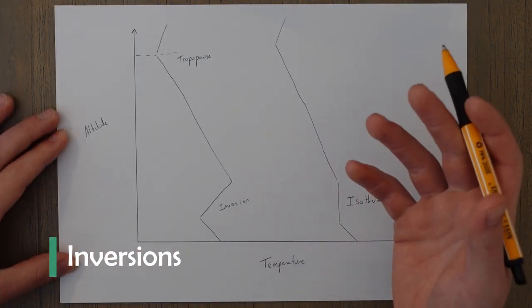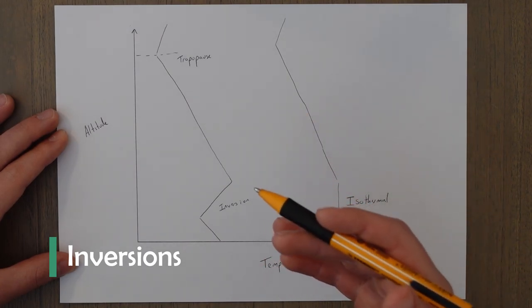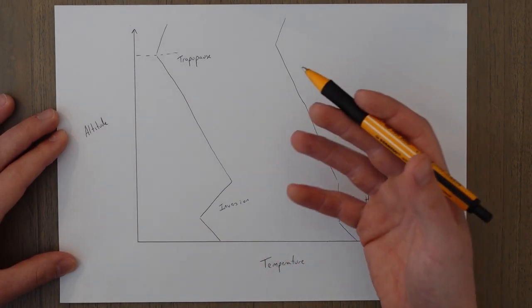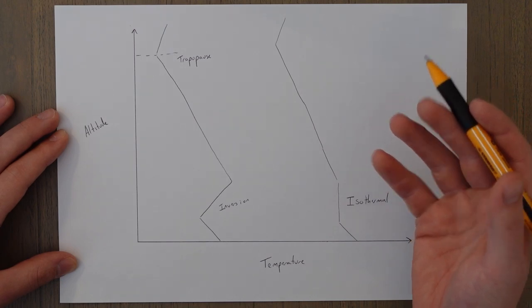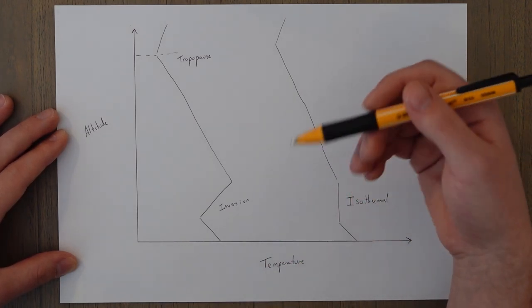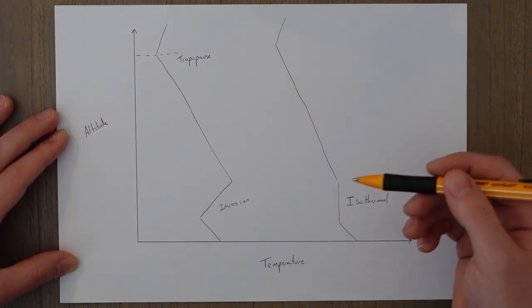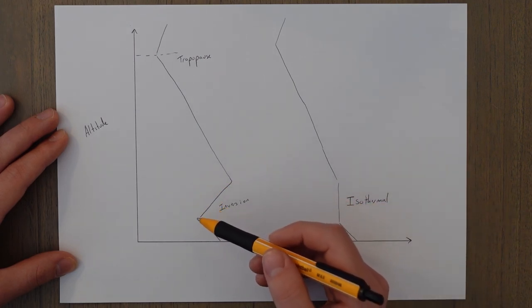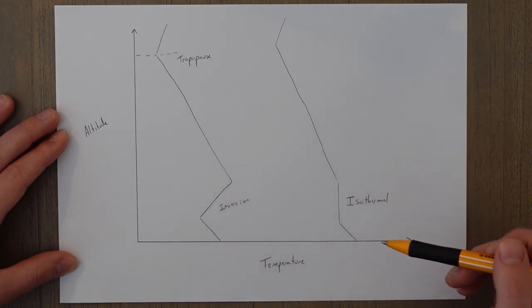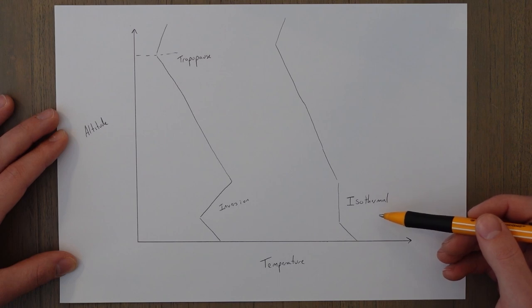Normally in the troposphere the temperature drops by about 1.98 degrees per thousand feet or 2 degrees per thousand feet. Occasionally though inversions will occur. This is where instead of reducing the temperature actually increases or if it remains constant it's known as an isothermal layer.